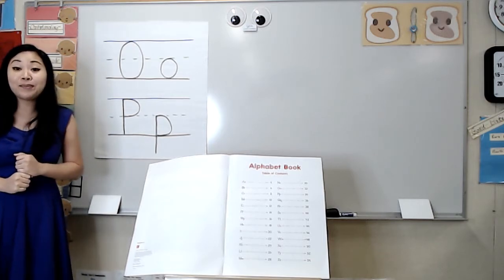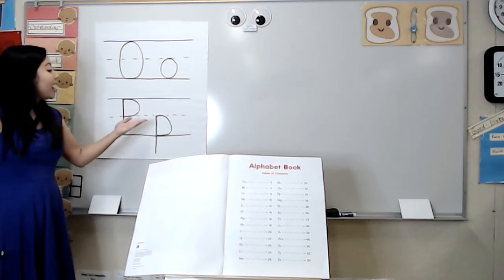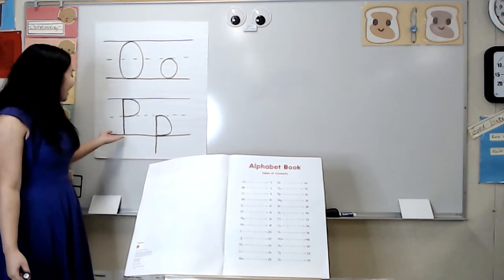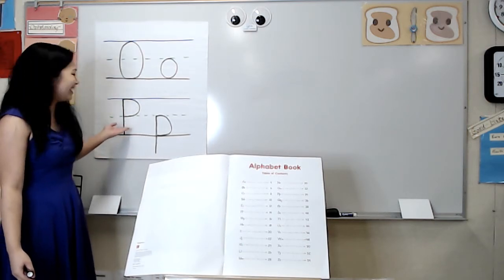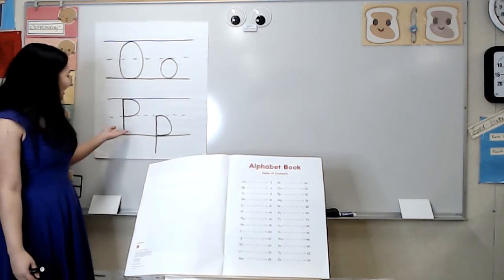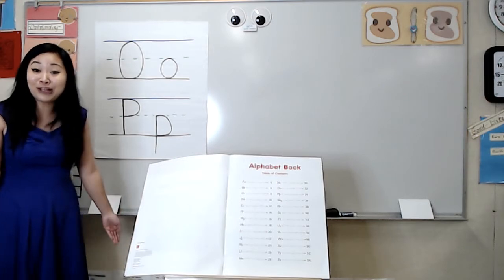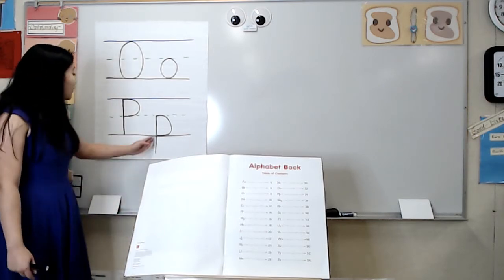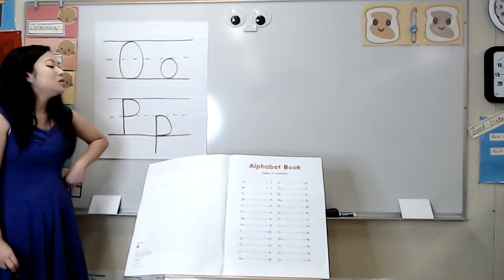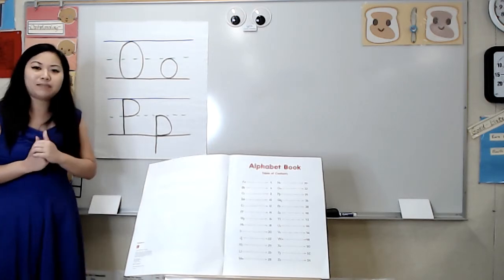Again, this is the letter P. What do you notice about uppercase P and lowercase P? You're right. Uppercase P is, well, I don't know that it's bigger. I think actually they might be the exact same size, and they even look alike. They both have a vertical line and a bubble, but wait. Something's different about lowercase P.